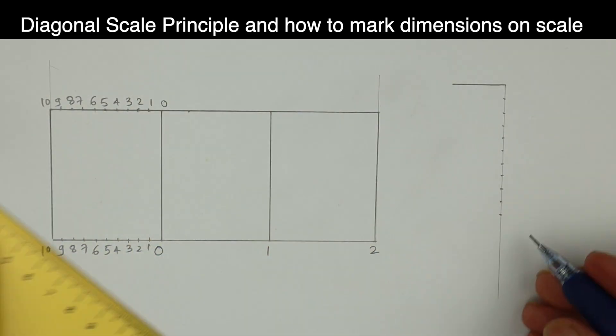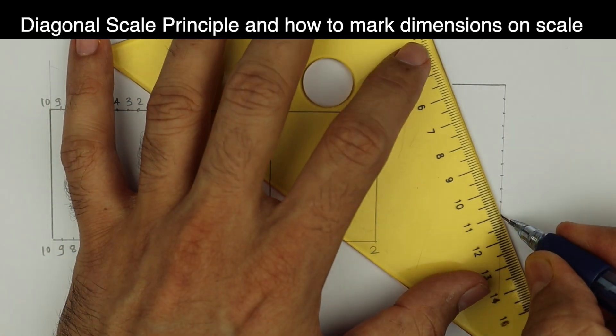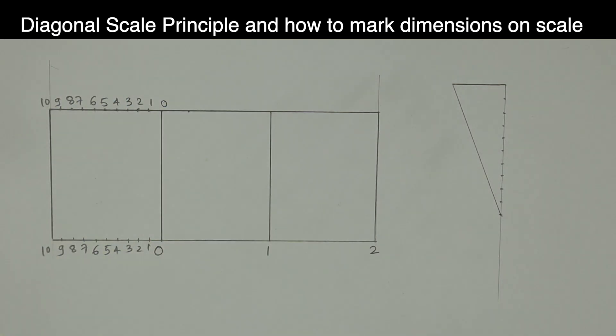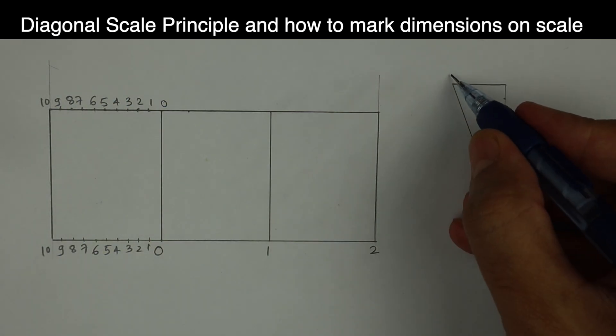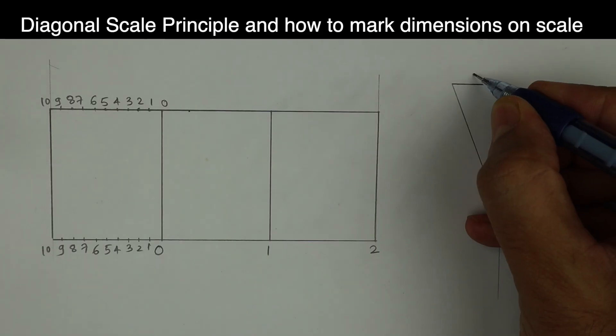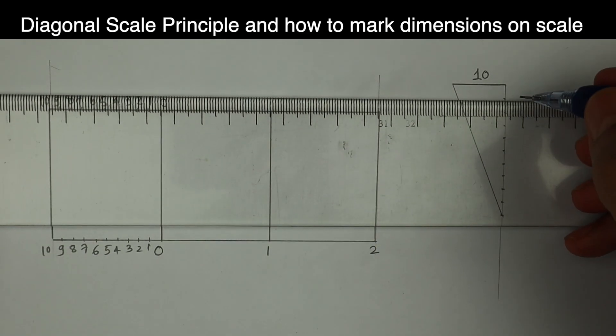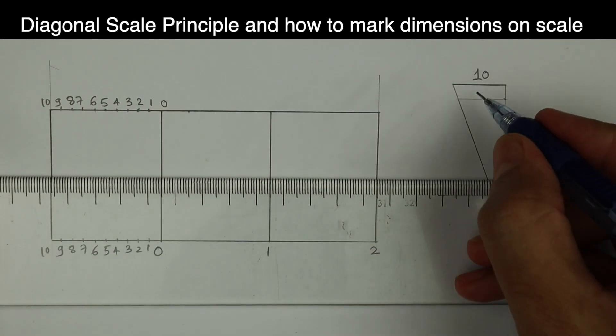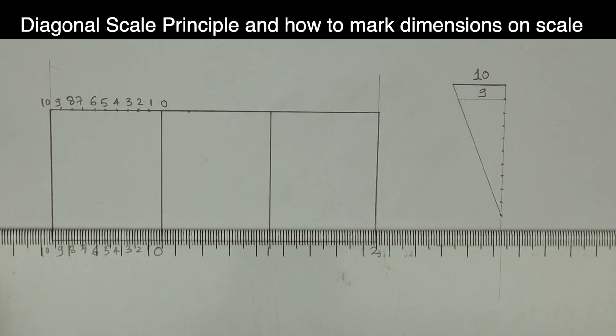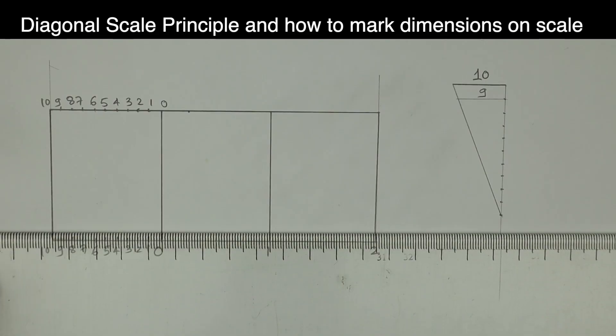So I have done 10 equal parts, then join this to this. See this. Let's say this line is 10mm long. So if you draw a line from here, then this will become 9mm. See, if this is 10, this is 9.